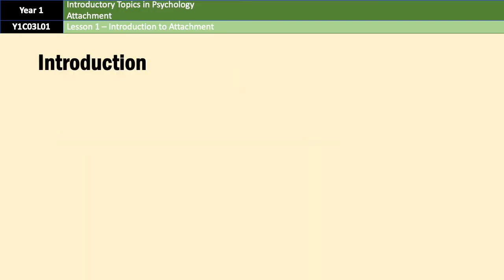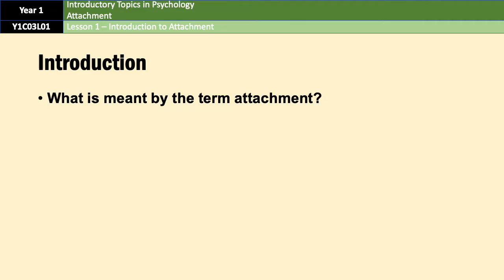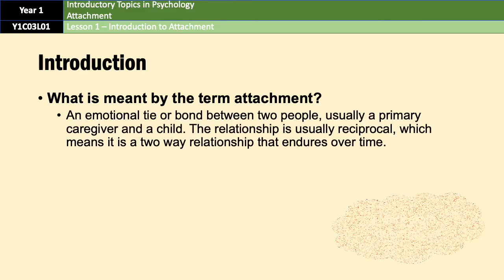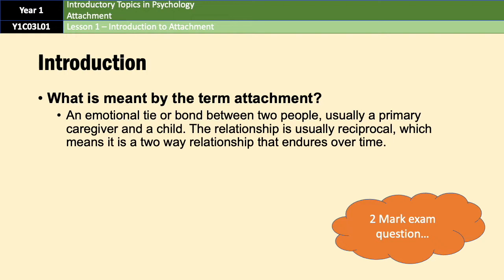Let's start with a key definition for this chapter. Attachment is defined as an emotional tie or bond between two people, usually a primary caregiver and a child. The relationship is usually reciprocal, which means it's a two-way relationship that endures over time. That is an important definition — it has come up as a two-mark question before.